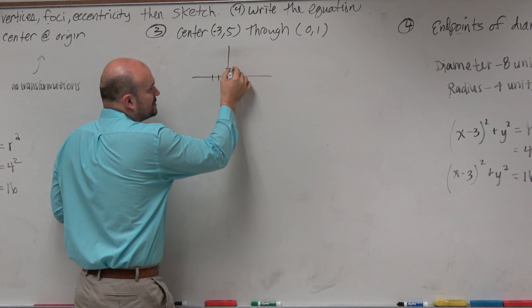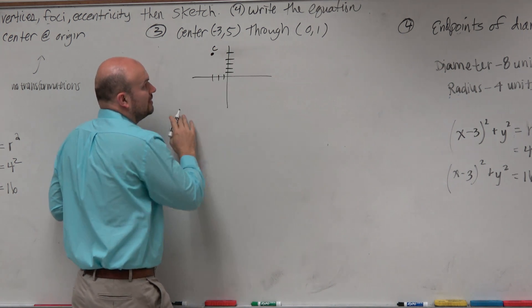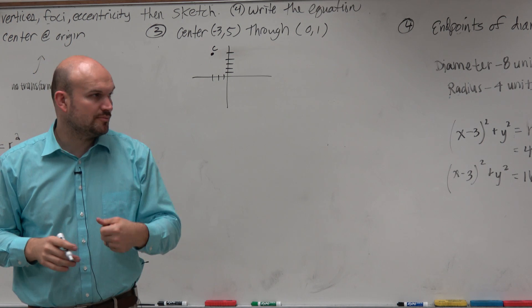1, 2, 3, 1, 2, 3, 4, 5. That is the center of the circle, and then the circle goes through the point (0, 1).